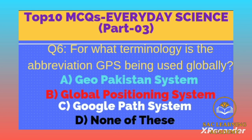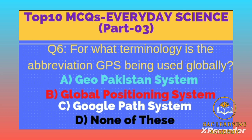Question number 6: For what terminology is the abbreviation GPS being used globally? Option A: geo-Pakistan system, B: global positioning system, C: Google path system, D: none of these. Correct option is B, global positioning system. GPS is a satellite navigation system used to determine the ground position of an object. The GPS system includes 24 satellites deployed in space about 12,000 miles above the Earth's surface. They orbit the Earth once every 12 hours at an extremely fast pace.